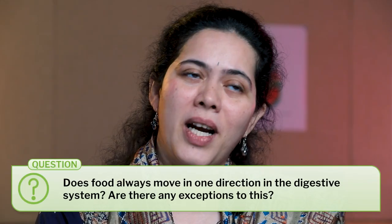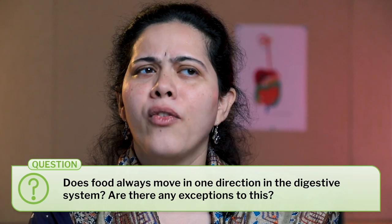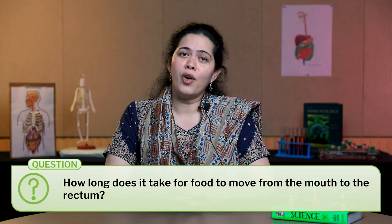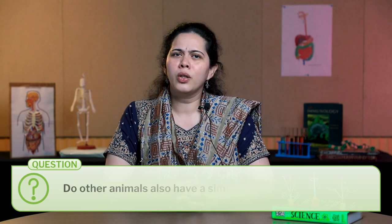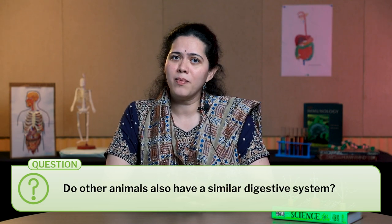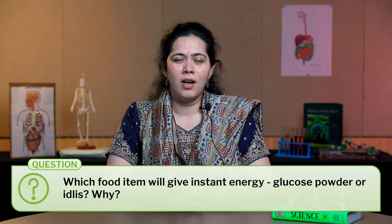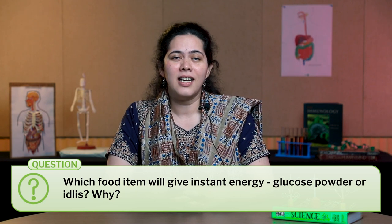To revise, you can ask your students to enlist the various organs of the digestive system and explain the process of digestion step by step. This is a great way to recap what they have learned. You can also give more questions about the digestive system as home assignment, such as: do you think food always moves only in one direction? Can you think of an instance where food moves in the opposite direction? How much time do you think it takes for food to move from mouth to the rectum? Do you think other animals also have a similar digestive system? If Sita ate glucose and Gita ate idli or dosa, who do you think will receive instant energy and why?